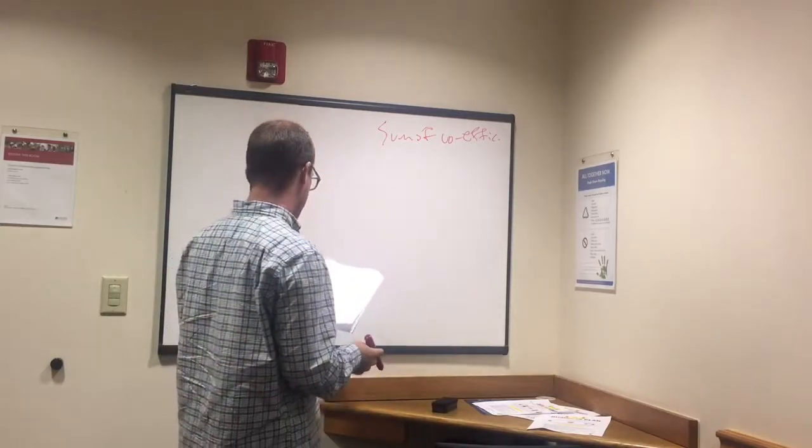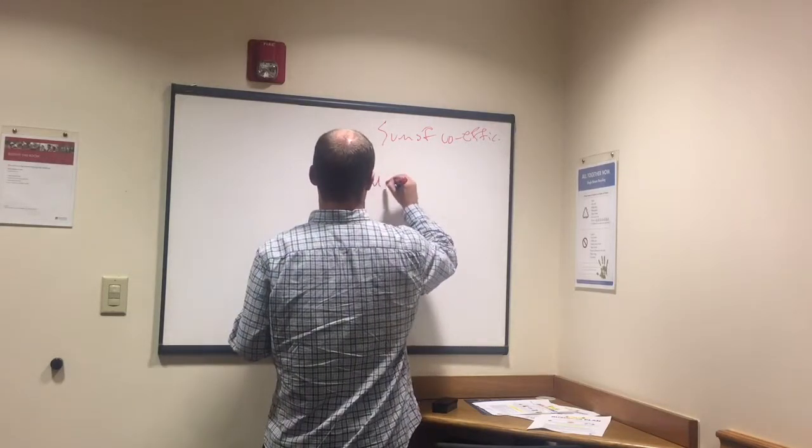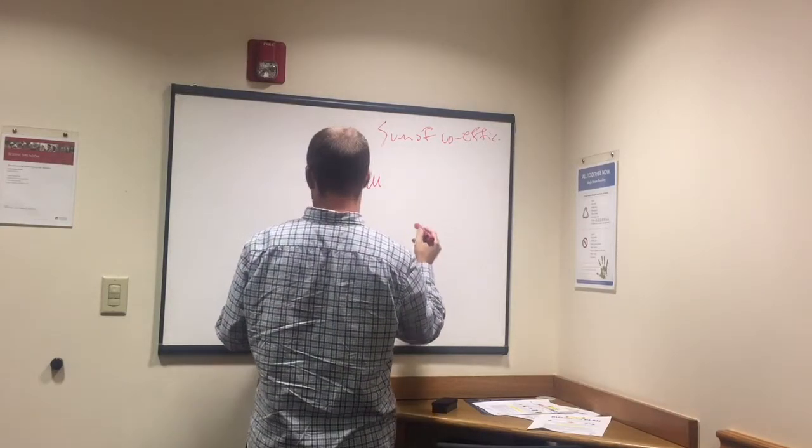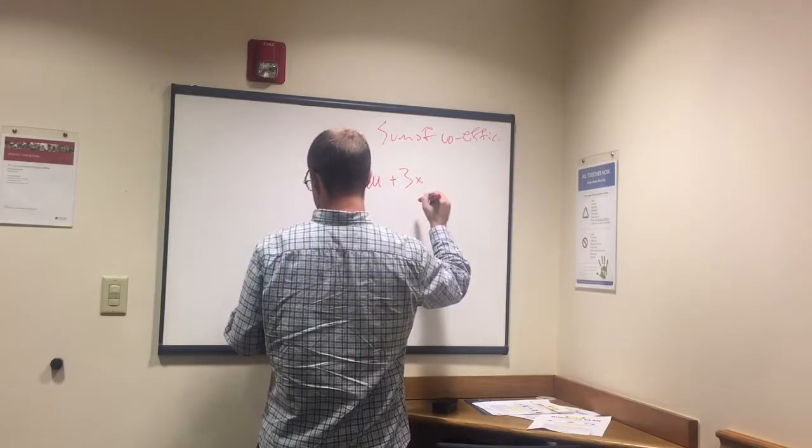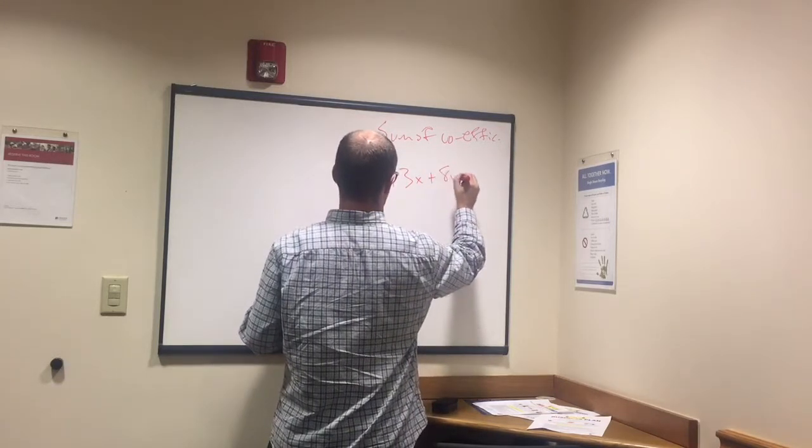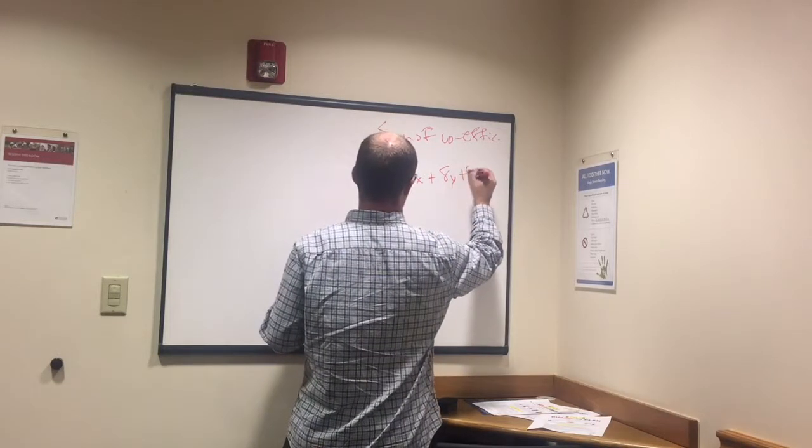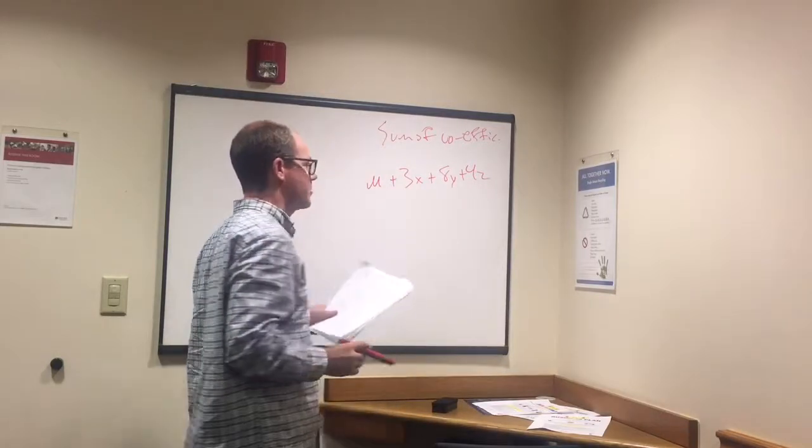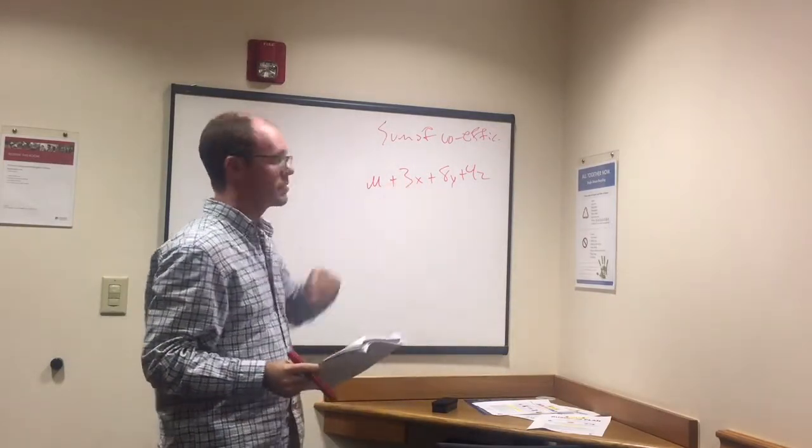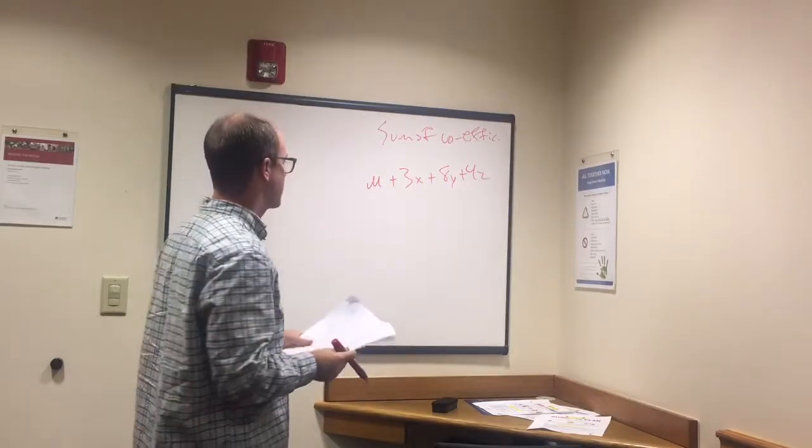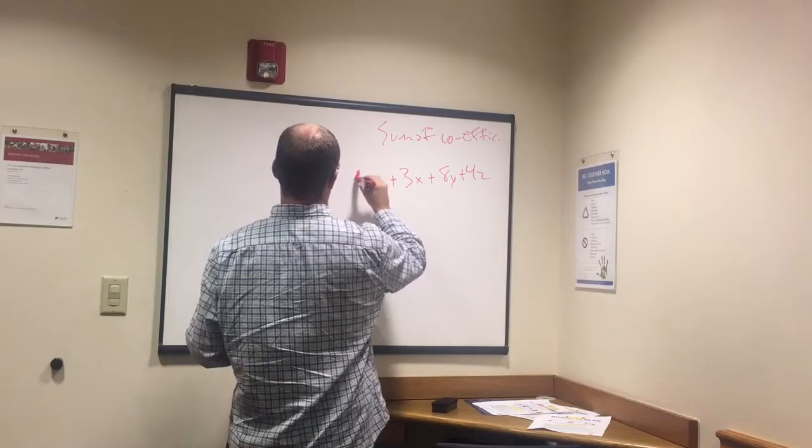If you had the variable u plus 3x plus 8y plus 4z and they said what is the sum of the coefficients, it's just the number in front of each of those variables and add them up. With this u here, if it doesn't put it there that means one. One and one u are the same.